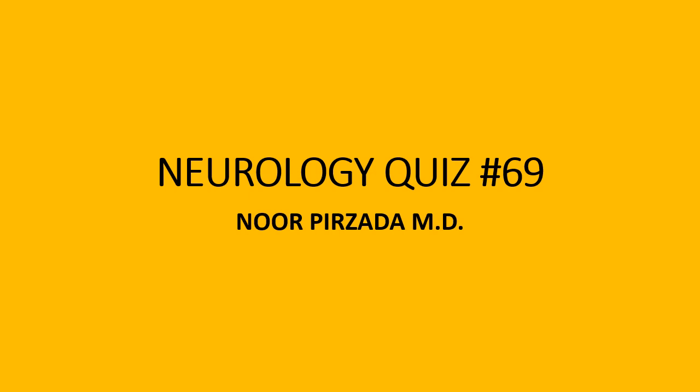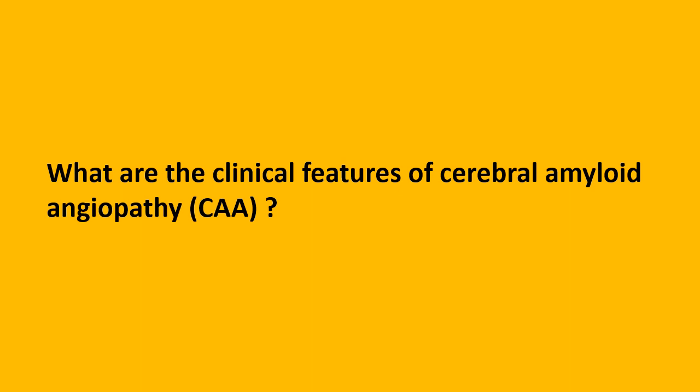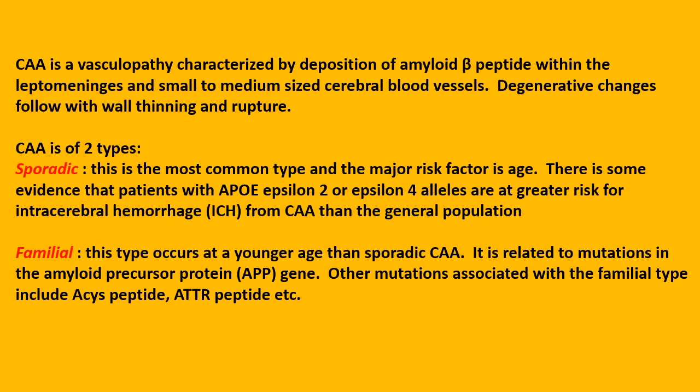Neurology quiz number 69. What are the clinical features of cerebral amyloid angiopathy, or CAA? CAA is a vasculopathy characterized by deposition of amyloid beta peptide within the leptomeninges and small to medium sized cerebral blood vessels. Degenerative changes follow, with wall thinning and rupture.